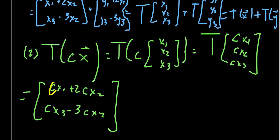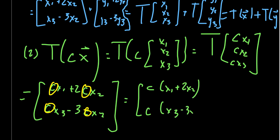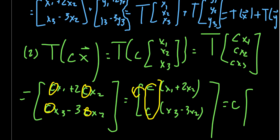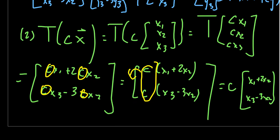Notice there is a common factor of C in the first entry and in the second entry. Factoring out C gives C times (X1 + 2X2) and C times (X3 - 3X2). We can factor C out via scalar multiplication, giving C times the vector (X1+2X2, X3-3X2), which is exactly C times T(X). So T(CX) equals C·T(X).